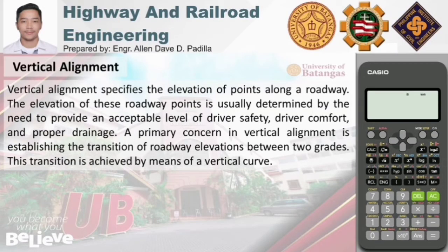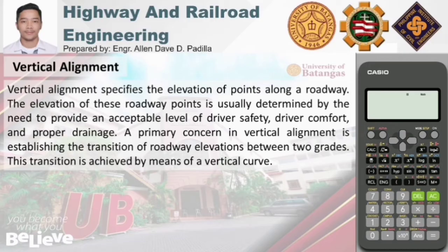The vertical alignment specifies the elevation of points along a roadway. The elevation of these roadway points is usually determined by the need to provide an acceptable level of driver safety, driver comfort, and proper drainage. A primary concern in vertical alignment is establishing the transition of roadway elevations between two grades. This transition is achieved by means of a vertical curve — for example, when we have two adjacent grade lines, we need to provide a smooth transition for the safety and comfort of users.